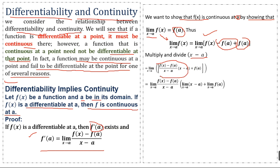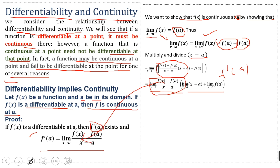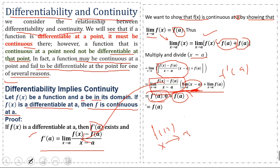We recognize that [f(x) − f(a)] / [x − a] is the definition of the derivative. Applying the limit to this expression, it equals f'(a). When we apply the limit to (x − a), this becomes 0, so f'(a) · 0 = 0. Therefore, the limit as x approaches a of f(x) equals f(a), meaning the function value at the limit equals the function value at a.